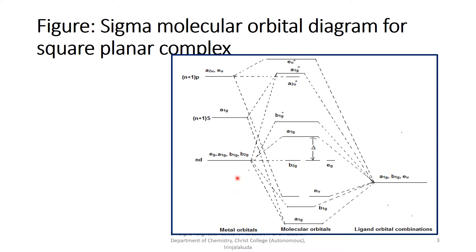Here, the metal orbitals, valence orbitals, that has nine valence orbitals, nd, n plus 1s and n plus 1p orbitals. Four metal orbitals, these Eg, A1g, B1g, B2g.